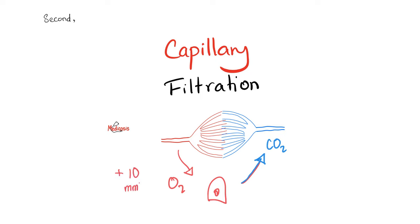You start at the left ventricle with oxygenated blood, then the aorta, then arteries, then arterioles — and then you give oxygen to the cell and receive carbon dioxide from the cell. Arterial end versus venous end: the arteriole gives oxygen and nutrients to the cell; the vein receives carbon dioxide and waste products from the cell. Between your capillary bed and the cells, there is the interstitial fluid — very important.